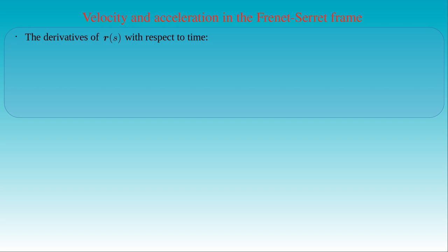By introducing the Frenet-Serret frame, we can describe the velocity and acceleration of a body moving along an arbitrary spatial curve in a convenient way. We already determined the first and second-order derivatives of the position vector r with respect to time t. Its first-order derivative is s-dot times r-prime, i.e., r-dot equals s-dot times r-prime. The second-order derivative r-double-dot equals s-dot squared times r-double-prime plus s-double-dot times r-prime. The magnitude of the velocity is the speed, which is the time derivative of the arc length. Since the speed V equals s-dot and the tangent T is r-prime, we can write the velocity vector as the speed times the tangent vector, showing that the velocity points in the direction of the tangent to the path.